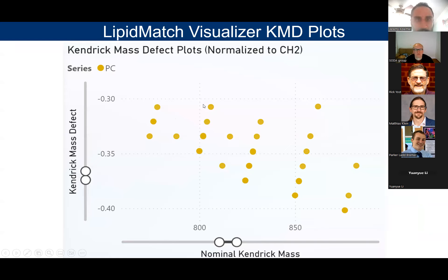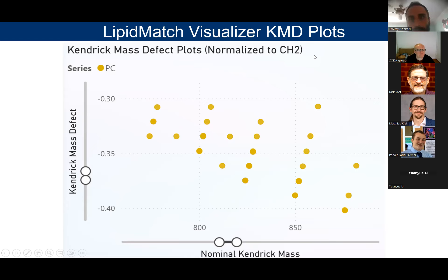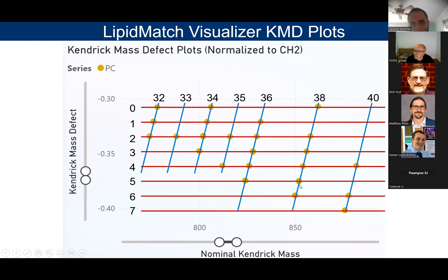Now let's look at the visualizer. One component some of you may not be familiar with is the Kendrick mass defect plot. Instead of normalizing the periodic table to C12 where carbon-12 is 12.00, you normalize to CH2, which would be 14.00. So now any mass defect is related to heteroatoms, phosphates, different head groups of your lipid, as well as unsaturations. You get a really cool pattern where going diagonally you get more degrees of unsaturation, and going horizontally you get increasing carbon numbers. You can automatically tell what types of lipids may exist in your dataset, even if they're not annotated by MS/MS.